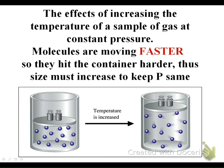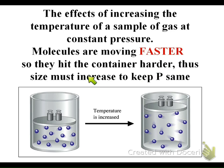Here's another graphic showing what we looked at in the diagram: the effects of increasing temperature on a sample of gas at constant pressure. The molecules are going to move faster because you're increasing the kinetic energy, so they hit the container harder. Thus, the size must increase to keep the pressure the same. As temperature increases, those molecules move faster — you can see that by the longer dashes behind them — and in order to keep pressure constant, the volume has to increase.